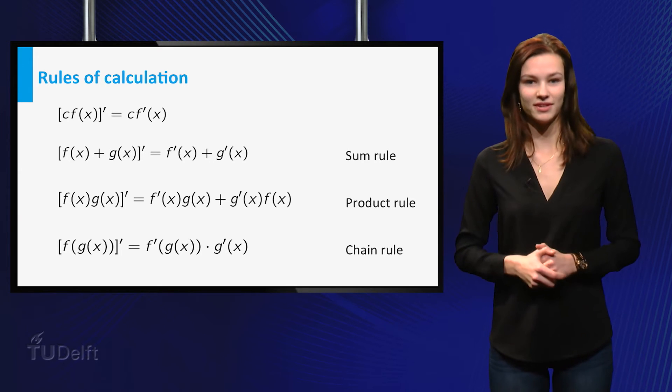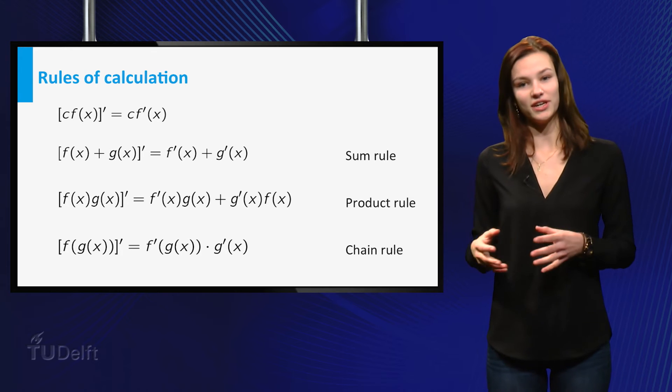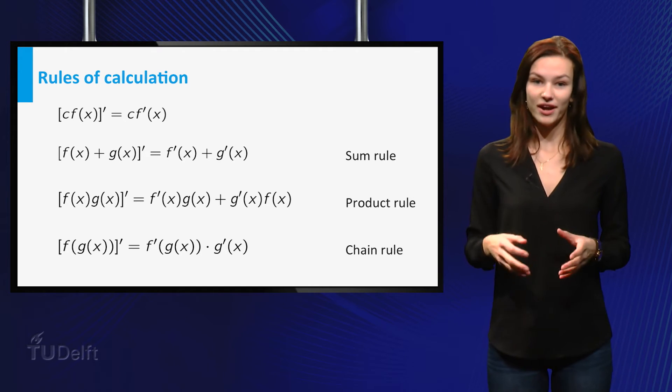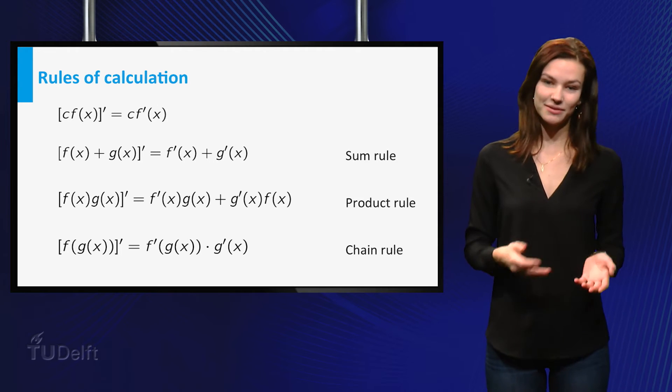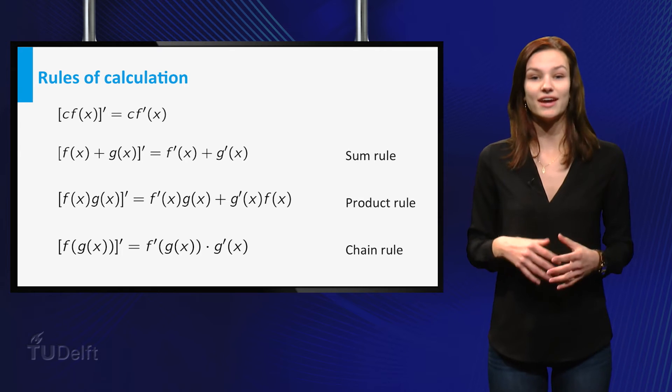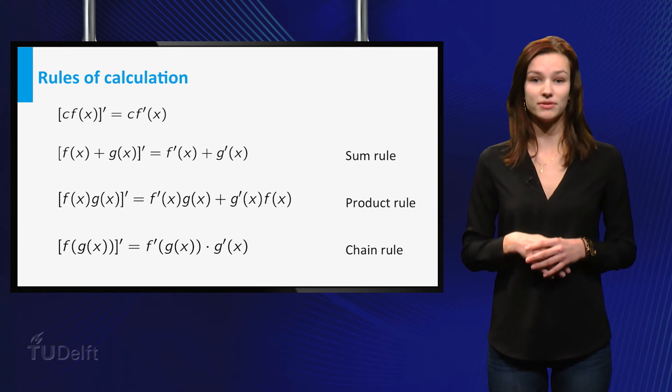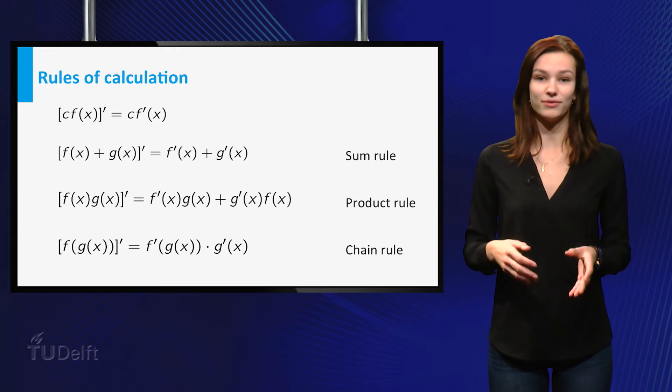We also know the product rule. This rule states that the derivative of f times g equals f prime of x times g plus g prime of x times f of x. Furthermore, the chain rule tells us that the derivative of f of g equals the derivative of f at value g times the derivative of g at value x.